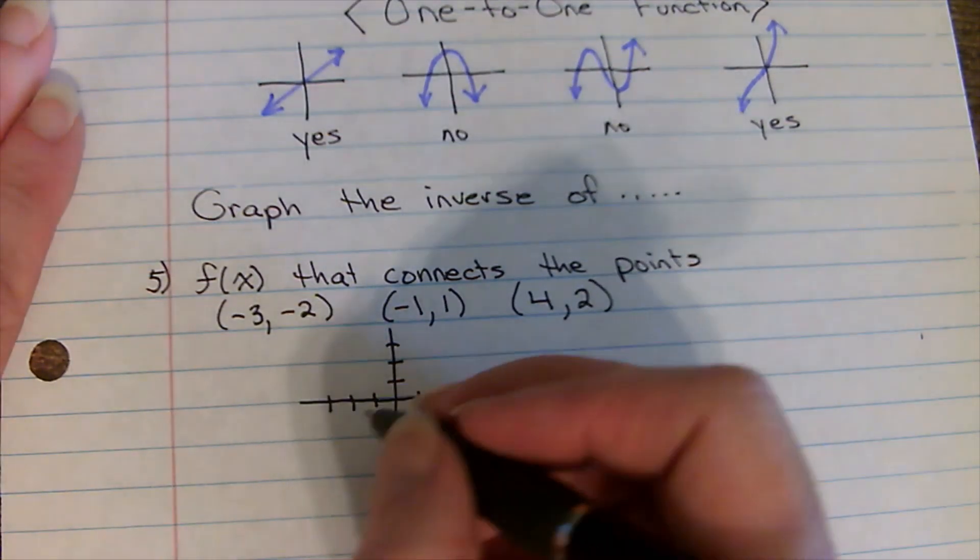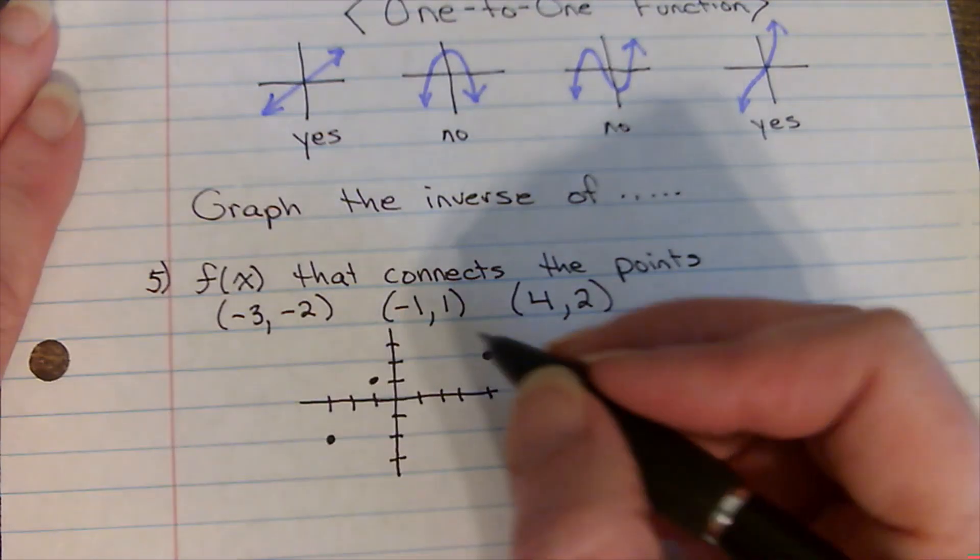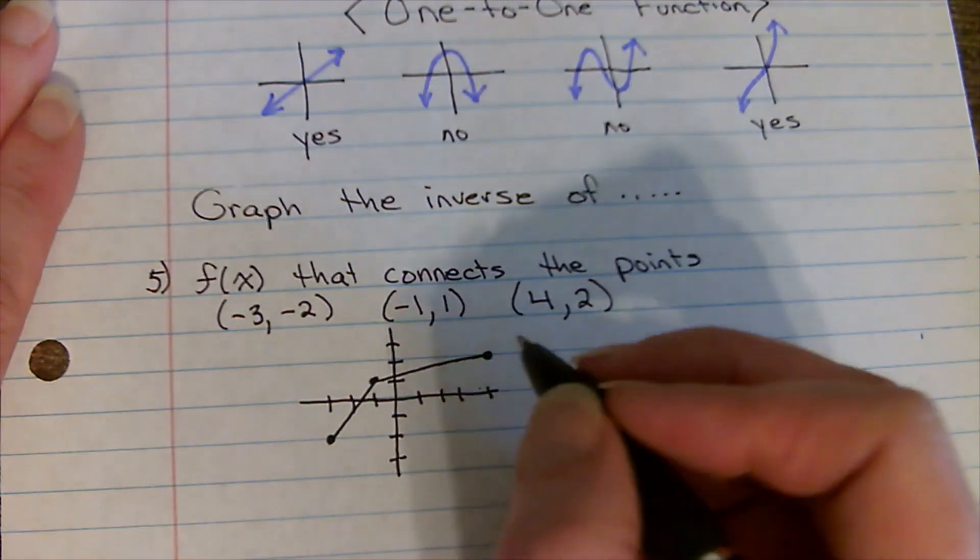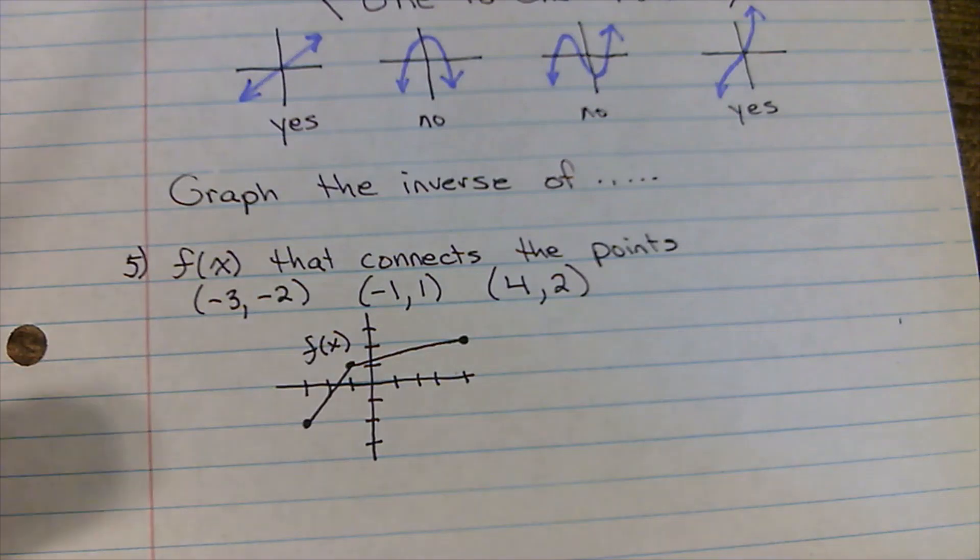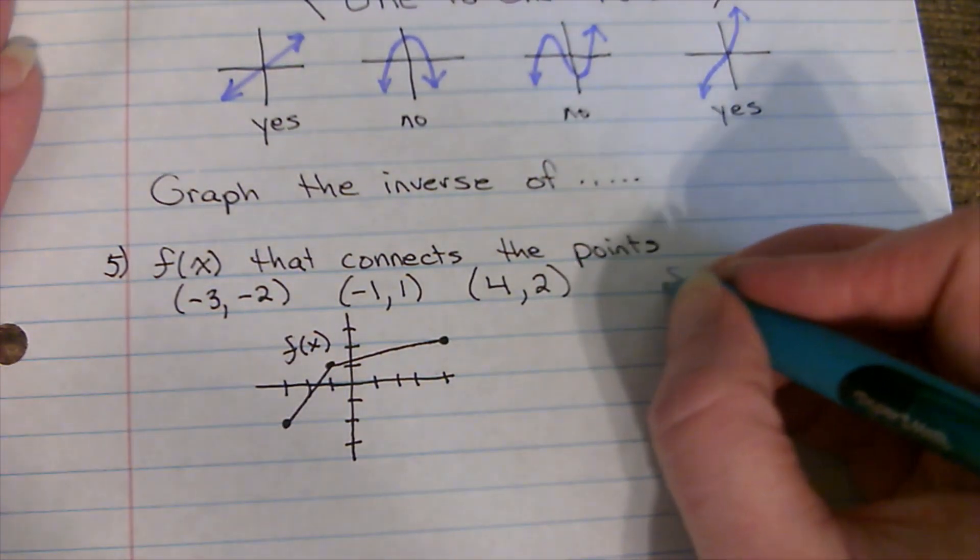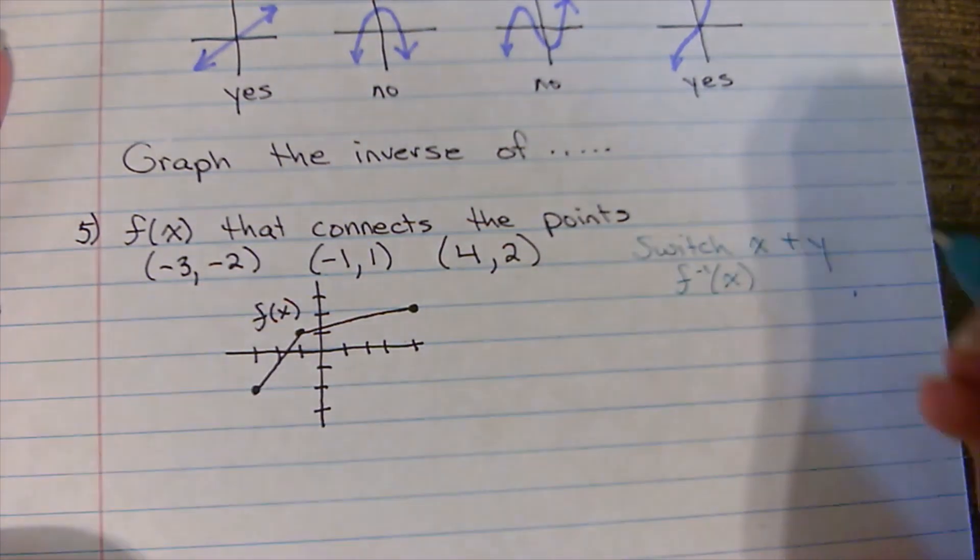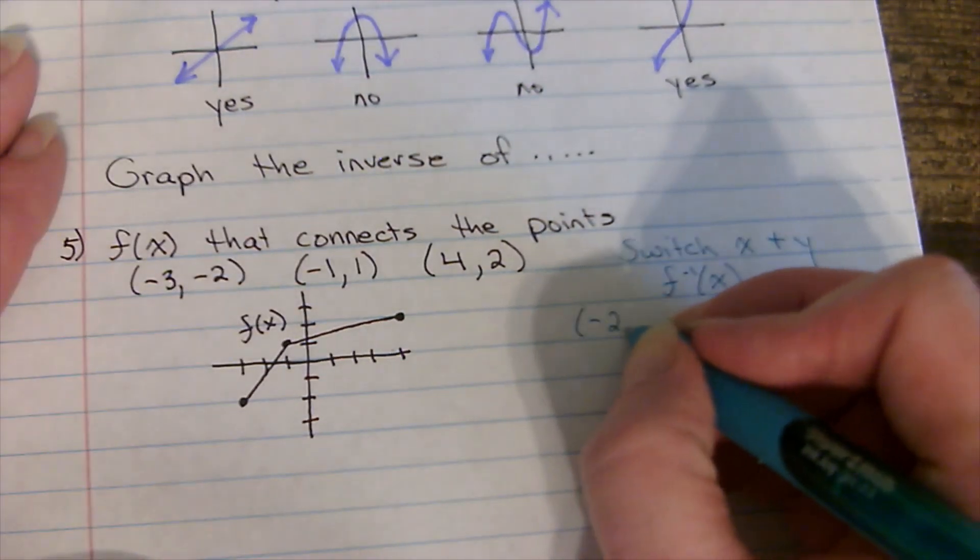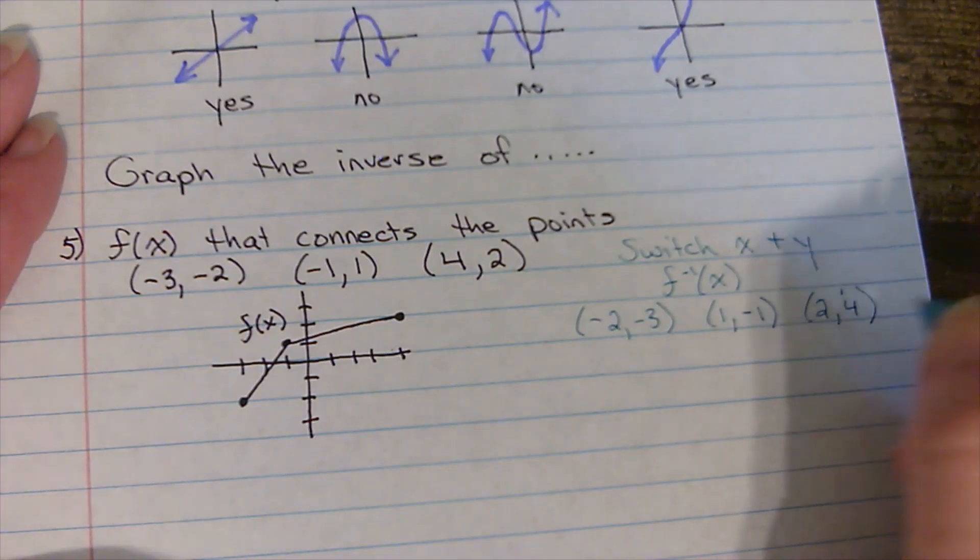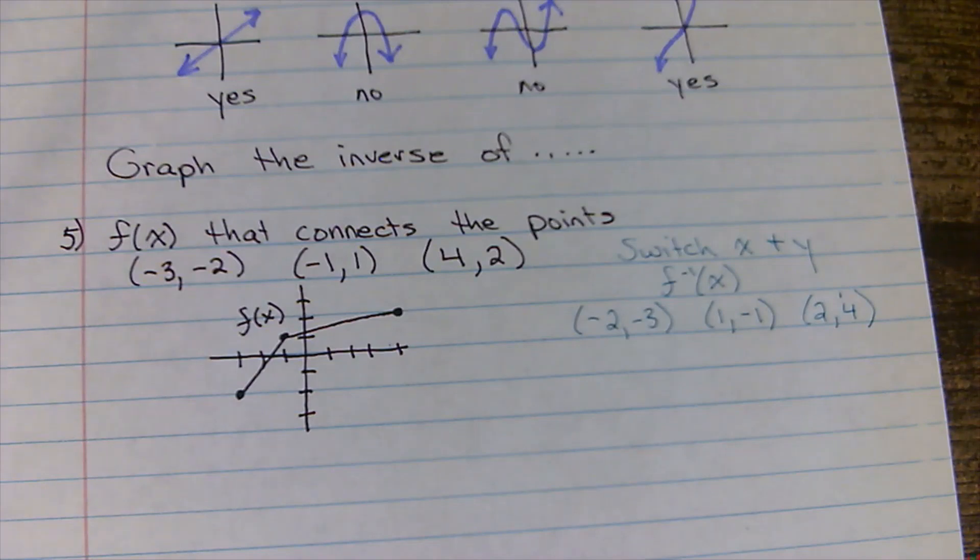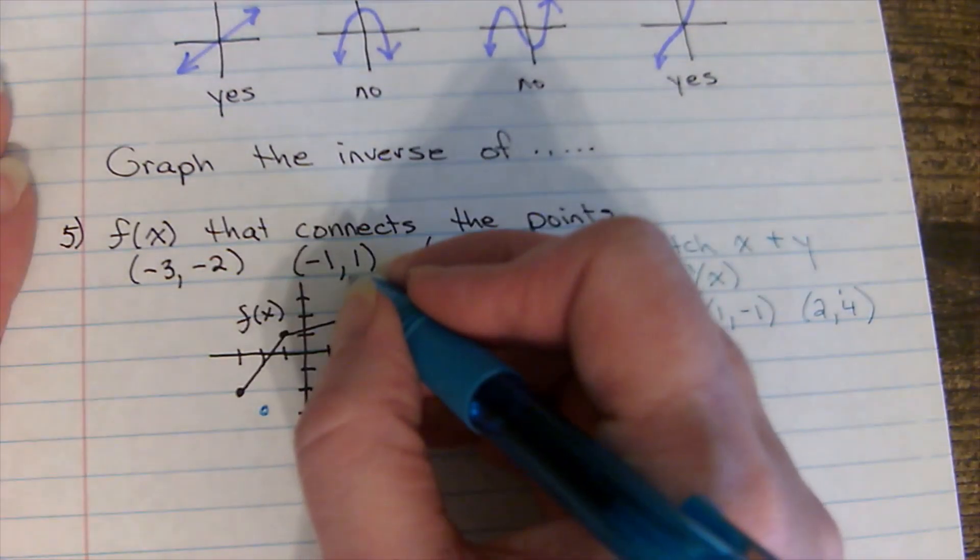This f of x, negative 3, negative 2, negative 1, 1, and 4, 2. Now remember, when we had the equation, we found the inverse by switching x and y. Guess what? To find the inverse, we're going to switch x and y. So f inverse would have the points switch x and y. Negative 2, negative 3, 1, negative 1, and 2, 4. You literally are switching the x and y's. So negative 2, negative 3 is here. 1, negative 1 is here. And 2, 4 would be up there.